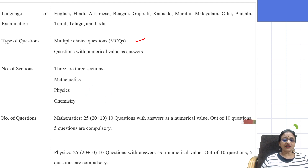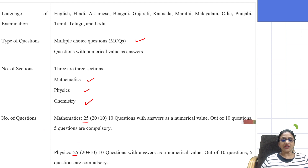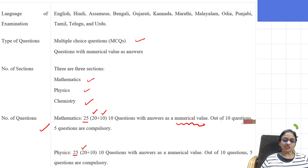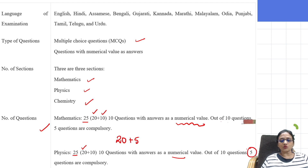Each subject — Maths, Physics, and Chemistry — has 25 questions total. These are split as 20 MCQ questions plus 10 numerical-based questions. Out of those 10 numerical questions, only 5 are compulsory. So the total you attempt per subject is 20 plus 5, giving 25 questions per subject.